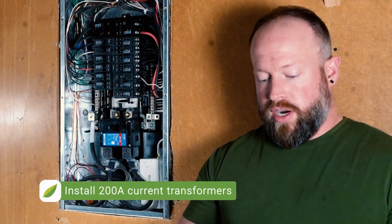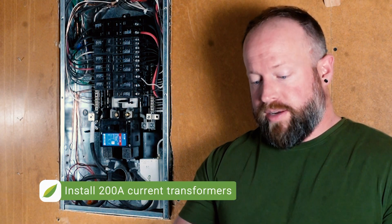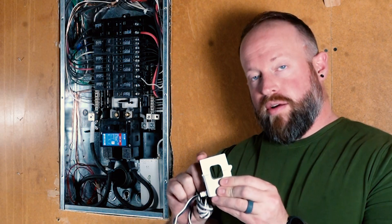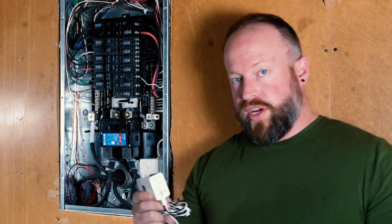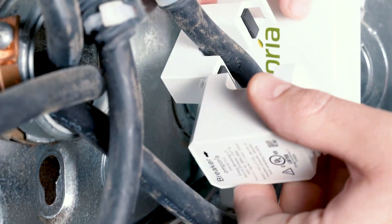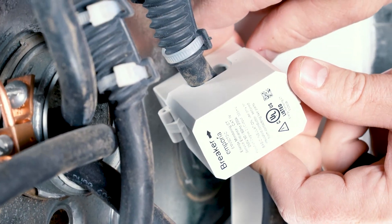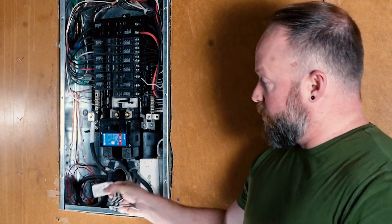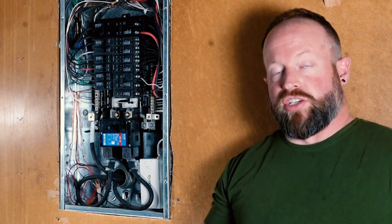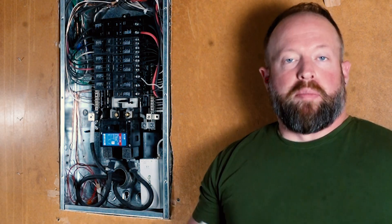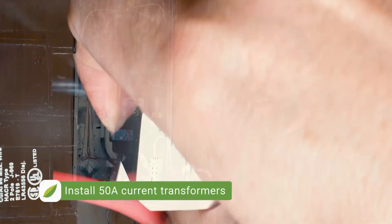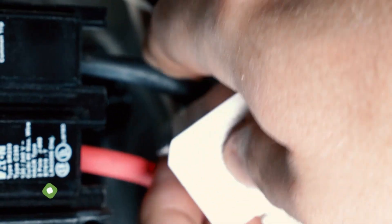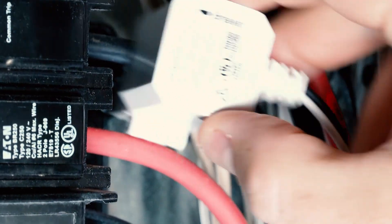These current transformers are clamshell type and they have a little clip where they open and they just clip around the wire that you want to measure. It's important to note that these current transformers have a label on the back of each one with an arrow pointing to breaker, and they need to be installed so that arrow is pointing at the breaker. Otherwise, the current that they are measuring will be registered as negative and will come up as negative in the app. The 50 amp current transformers also have an arrow pointing towards the breaker.